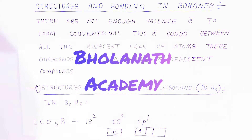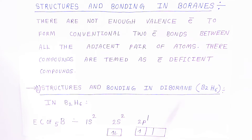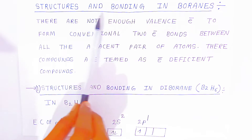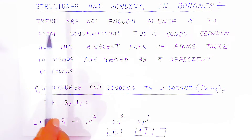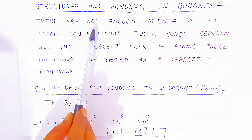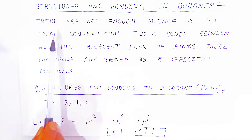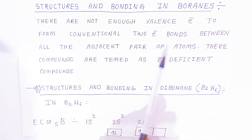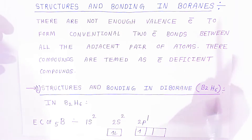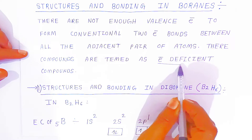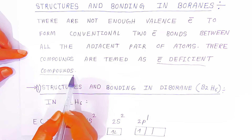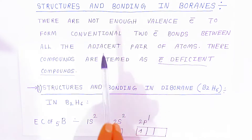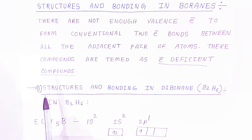Welcome to Bholanatha Academy. In this video, we are going to see the structures and bonding in boranes and their uses. There are not enough valence electrons to form conventional two-electron bonds between all adjacent pairs of atoms. Their compounds are termed electron deficient compounds. All boranes are electron deficient compounds — there is no two-electron bond system in boranes.